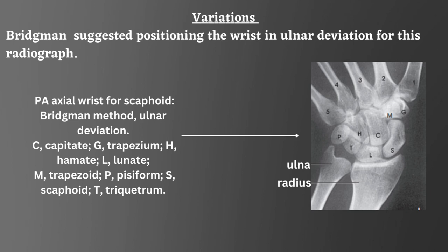Carpal bone labels: C = Capitate, G = Trapezium, H = Hamate, L = Lunate, M = Trapezoid, P = Pisiform, S = Scaphoid, T = Triquetrum.